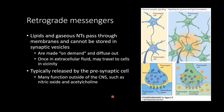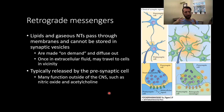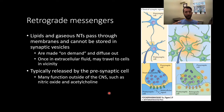Let's talk a little bit about retrograde messengers. Retrograde messengers are what they sound like — they go backwards. These are lipids and gaseous neurotransmitters that can pass through membranes and cannot be stored in synaptic vesicles. They don't do the normal neurotransmission thing where they are synthesized, packaged into a vesicle, and wait for an action potential to come along before binding and releasing. Instead, these are made on demand and diffuse out. Because of their nature as either gaseous or lipids, they are not contained by the lipid bilayer membrane and can just diffuse out freely.